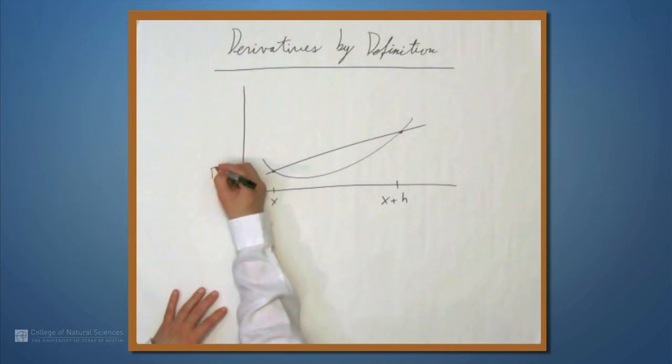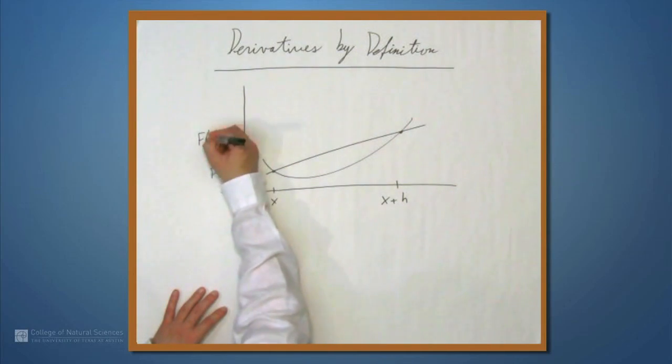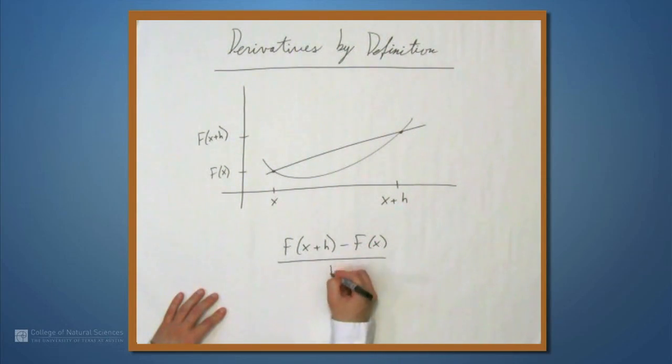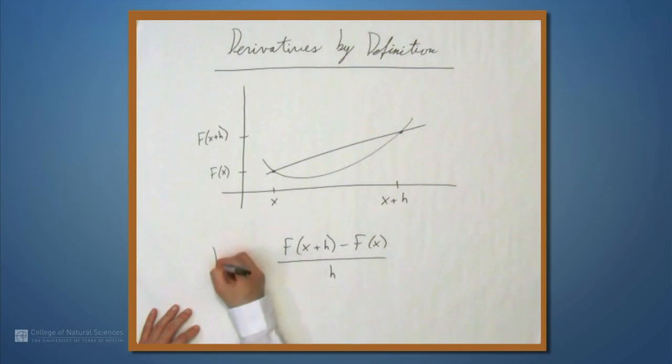The slope is going to use f of x and f of x plus h. The slope of the line that I just drew, therefore, is f of x plus h minus f of x all over h. The difference between these two over the difference between these two. And the derivative is the limit as h approaches 0, and this is denoted f prime of x. That's the derivative.